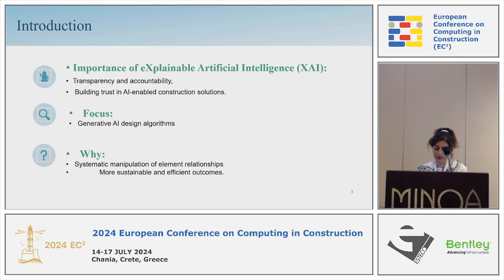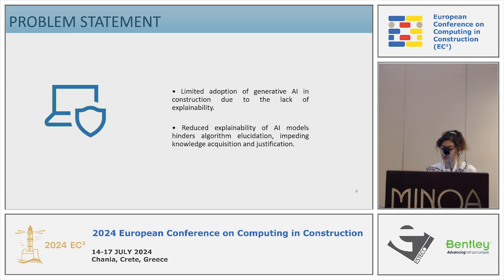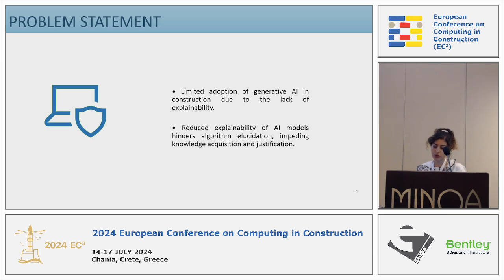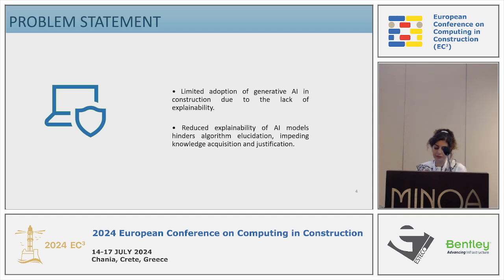This study has been conducted on the application of explainable AI to generative design models and algorithms, mainly because generative design plays a crucial role in the design world. There is a limited adoption of generative AI in construction industries due to the lack of explainability. When designers want to justify why certain changes have been made, they cannot do so, as they don't have the tools to justify it. According to Gerling, the diminished explainability of AI models can result in inability to elucidate algorithms, which means we cannot contest, evaluate, or derive knowledge from them, and therefore a progression in different aspects cannot happen effectively.